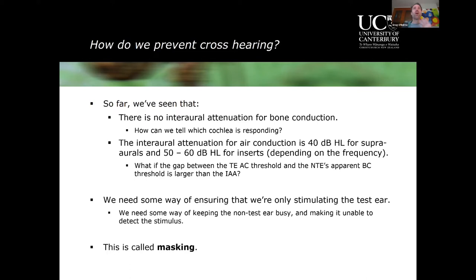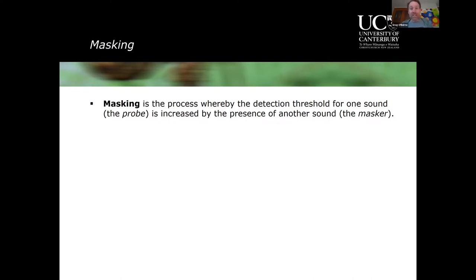The technique we use is called masking — where one sound prevents the ear from hearing another sound. It's the process whereby the detection threshold for one sound (the probe, our test stimulus) is increased — made worse — by the presence of another sound, the masker. We experience masking all the time in everyday life: if you're in a noisy environment trying to hear someone speak, the background noise prevents you from hearing them.